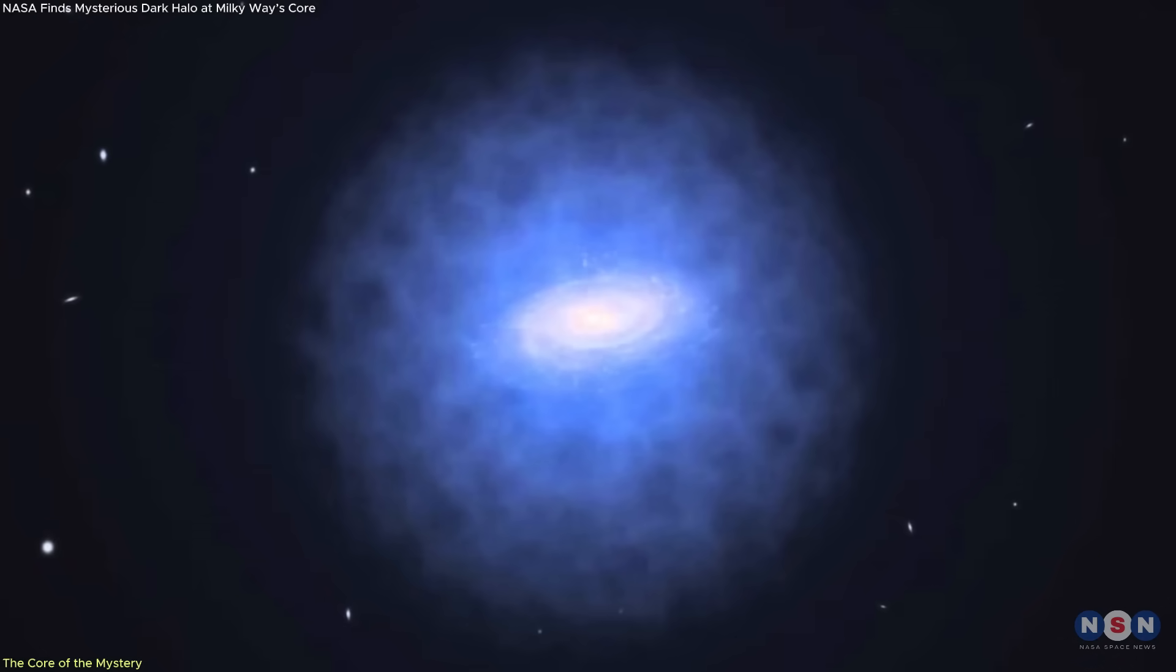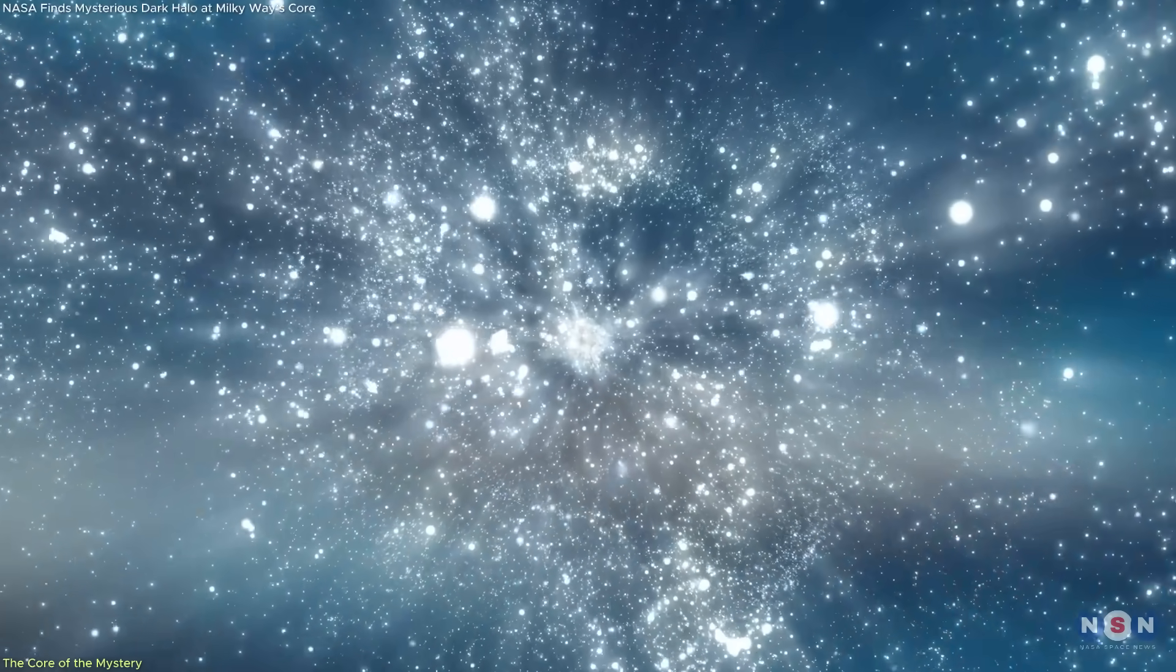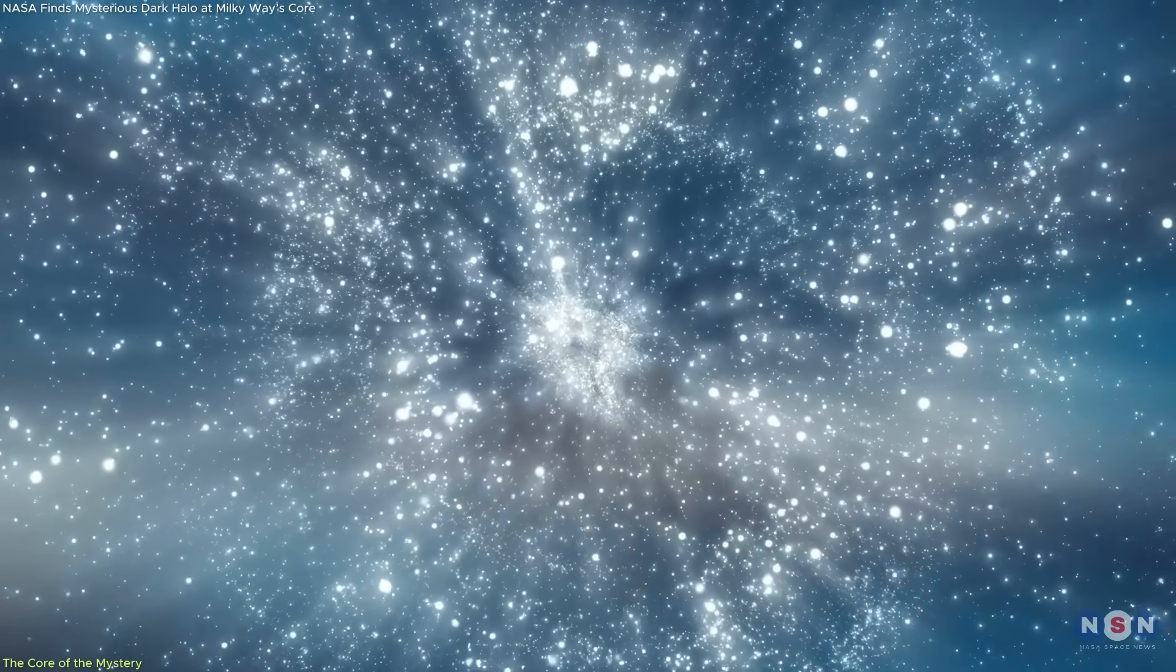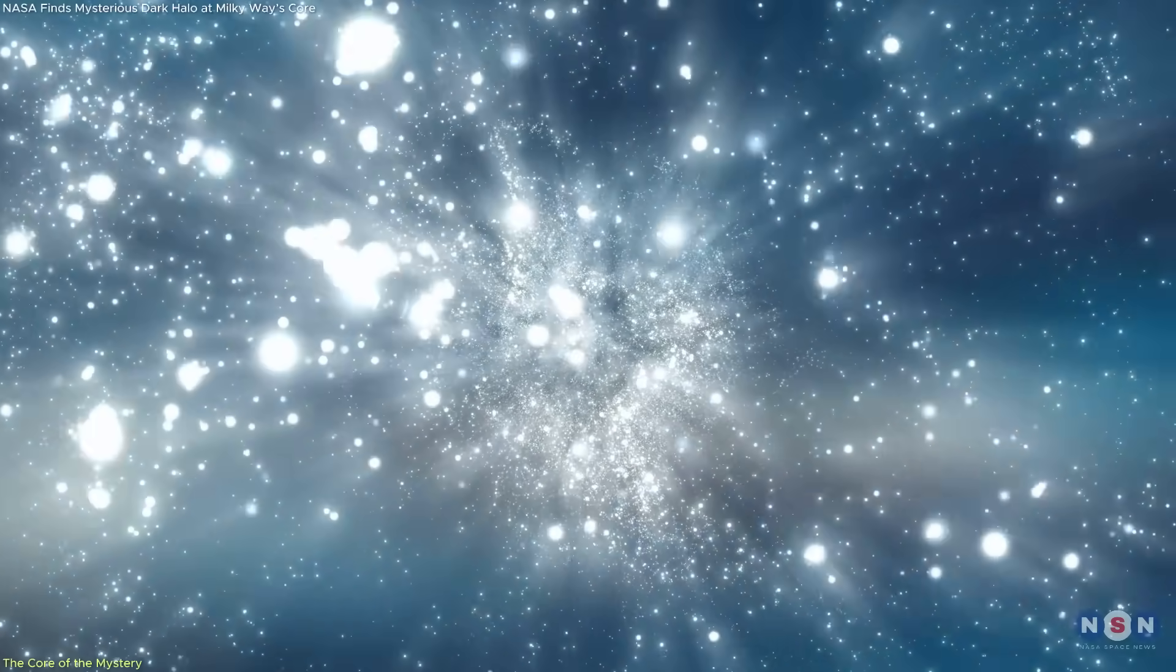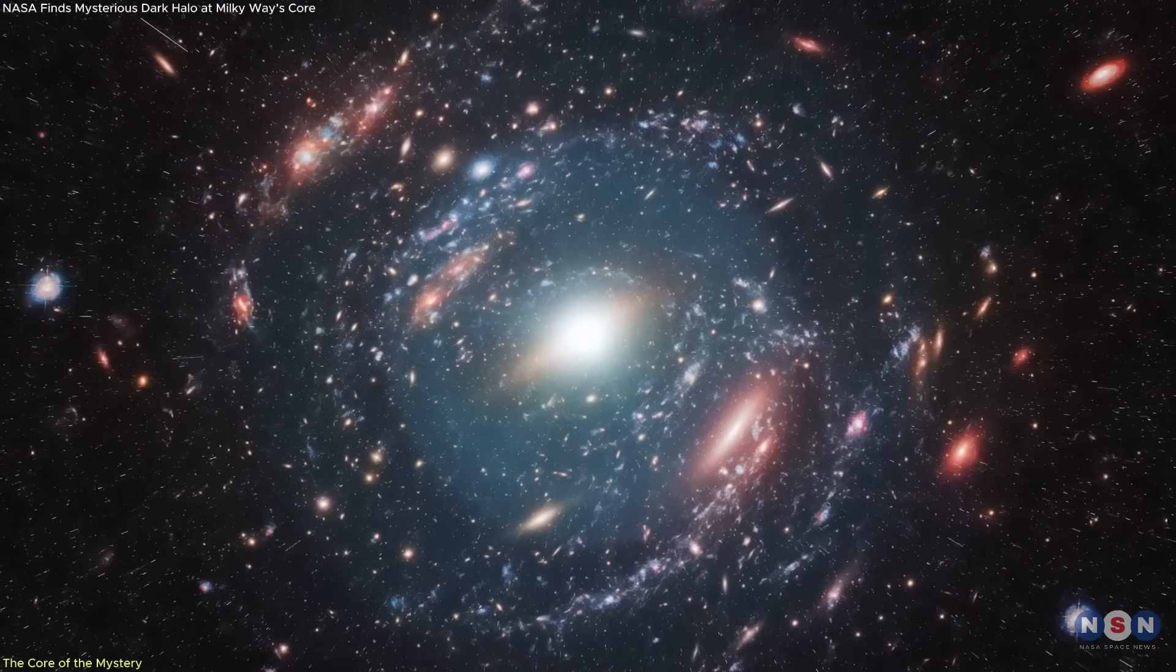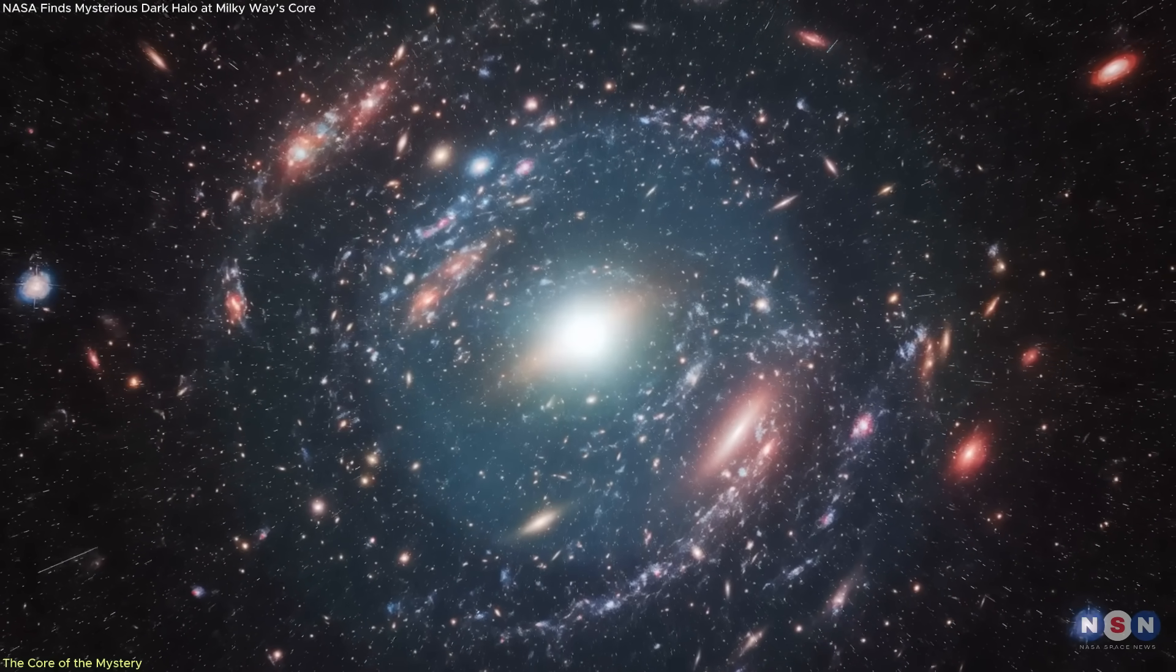The dark halo might not be a traditional structure at all. It could be the result of dark matter particles colliding and annihilating, releasing just enough energy to ionize hydrogen in the process. If true, we're not looking at dark matter directly, we're seeing what it does.